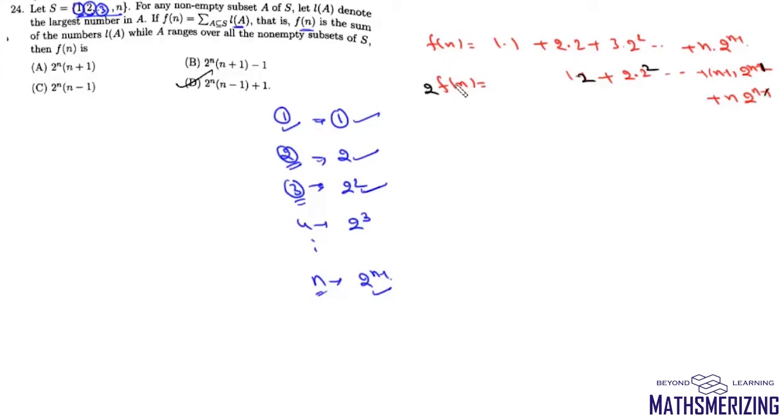Now we'll subtract the second from the first. We'll get -F(N), and when we subtract we'll get 1 + 2 + 2² + ... + 2^(N-1) - N×2^N.